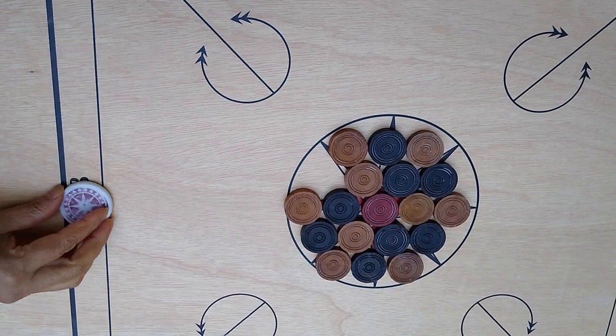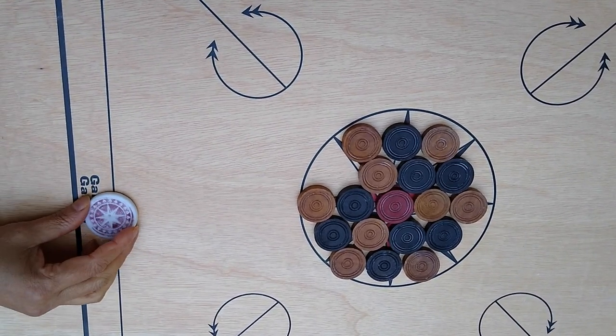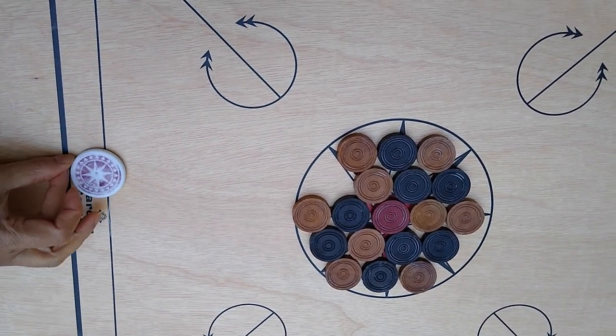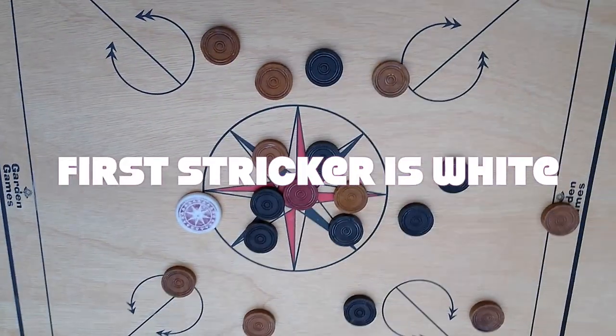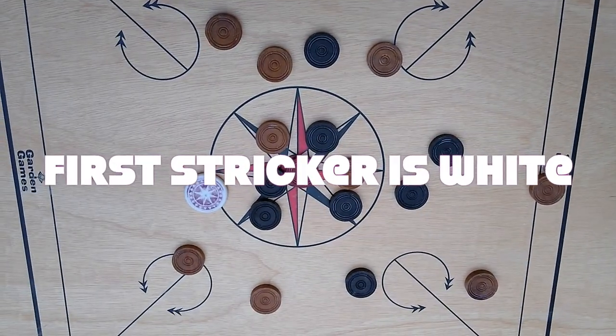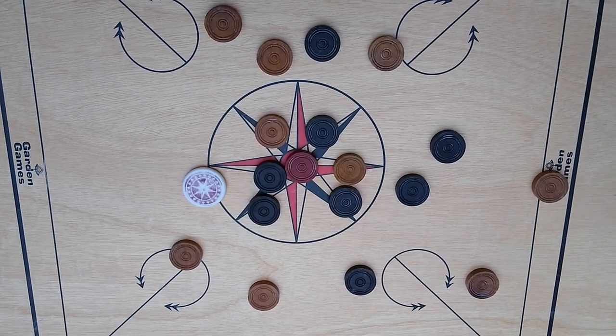All the opponent has to do is strike the set of coins. One thing: the person who strikes it is the white team, so I'm the black team.